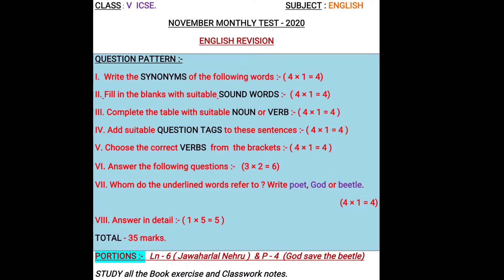First, Roman numeral one is: write the synonyms of the following words. So learn all the synonyms from lesson 6 as well as poem 4, God Save the Beetle. You will be asked 4 questions and you can write only the answer. Second one, fill in the blanks with suitable sound words. It is given in the poem exercise, so learn the sound words exercise there.